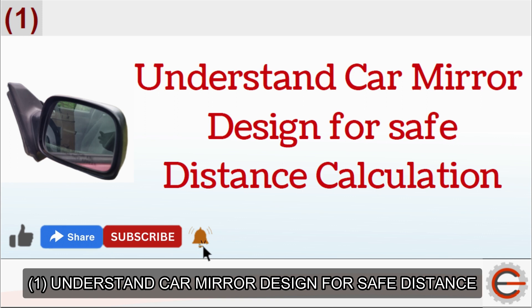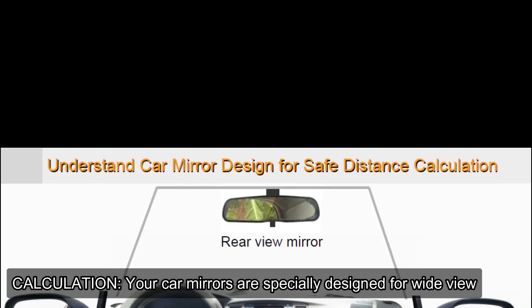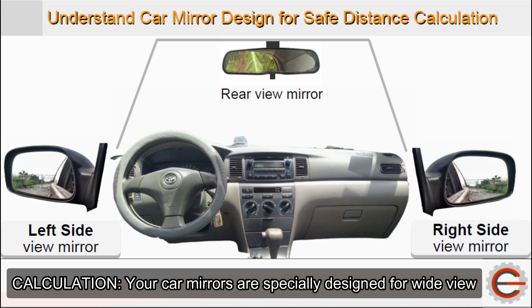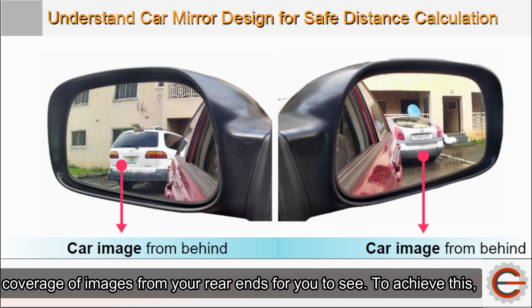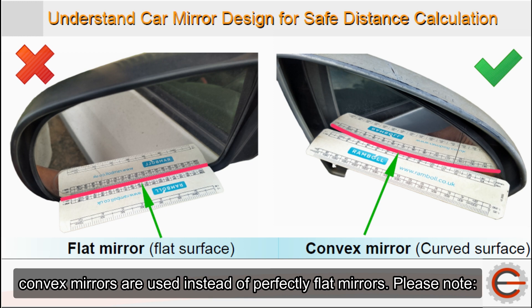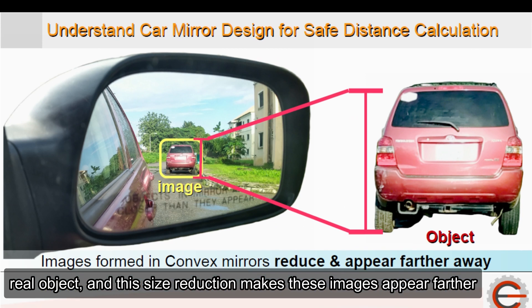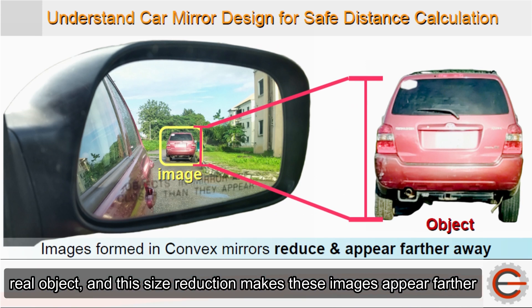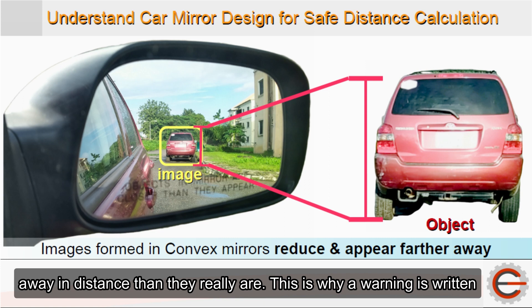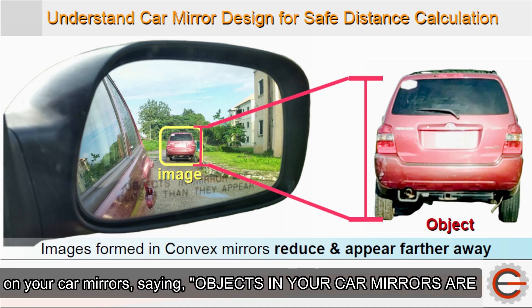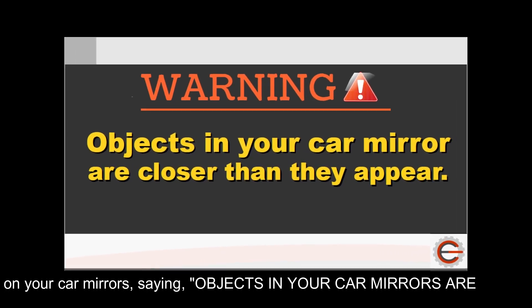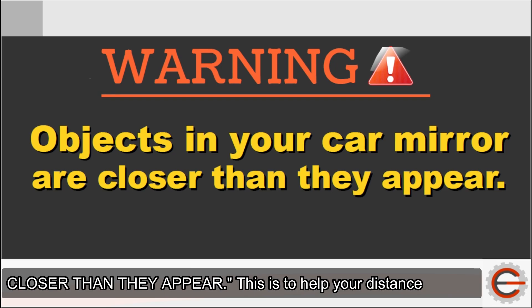Tip 1: Understand car mirror design for safe distance calculation. Your car mirrors are specially designed for wide view coverage of images from your rear ends. To achieve this, convex mirrors are used instead of perfectly flat mirrors. Please note: images formed in convex mirrors are usually smaller in size than the real object, and this size reduction makes these images appear further away in distance than they really are. This is why a warning is written on your car mirrors saying objects in your car mirrors are closer than they appear. This is to help your distance calculation while driving.